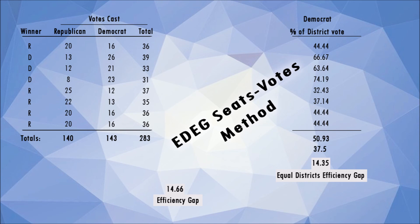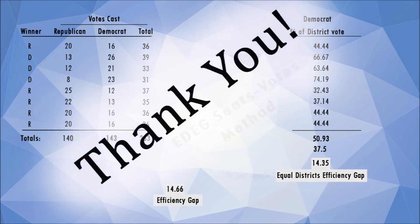Again, there is not a huge difference between the results here, but as stated, the more variable the voter turnout, the less accurate the wasted votes method becomes. If you would like more information as to how these equations were derived, please read the second half of my paper listed in the video description. These equations and their ramifications are discussed more deeply there. Using these equations has made calculating the efficiency gap much easier for me, and I hope the same is true for you.